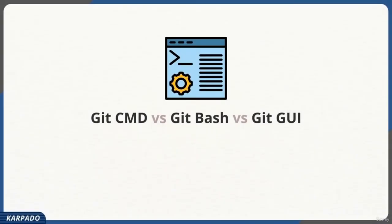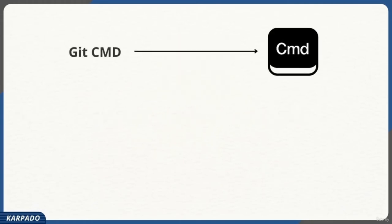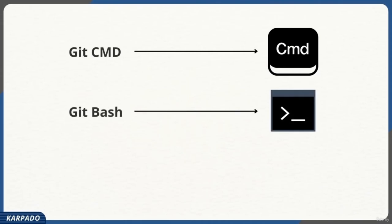There are basically three ways to interact with Git: Git CMD, Git Bash, or Git GUI. Git CMD is the Windows command processor — we already used it to test the Git installation. The other option is Git Bash, which is a tool installed along with Git. Git Bash is similar to the Windows command processor, except you can use standard Linux commands to interact with Git.